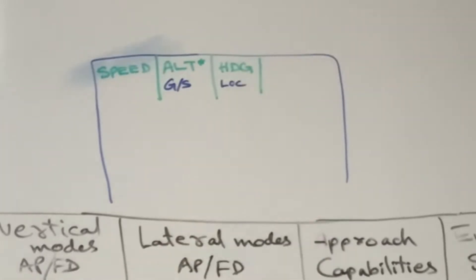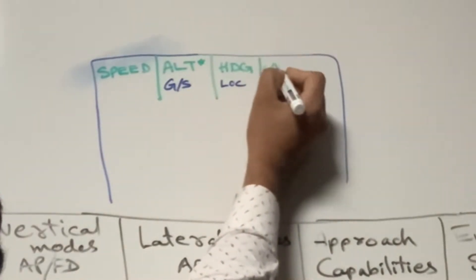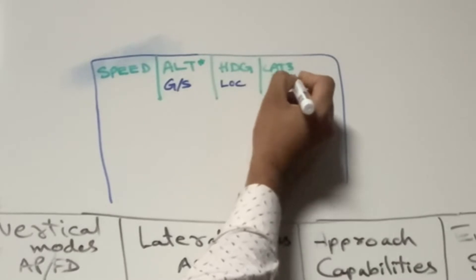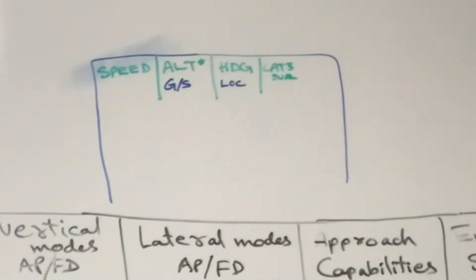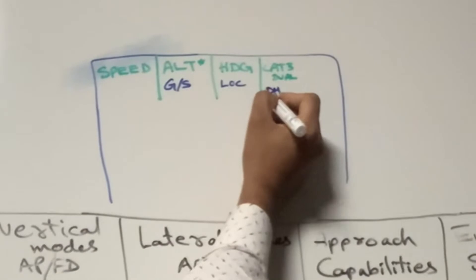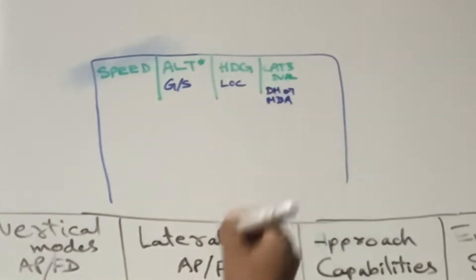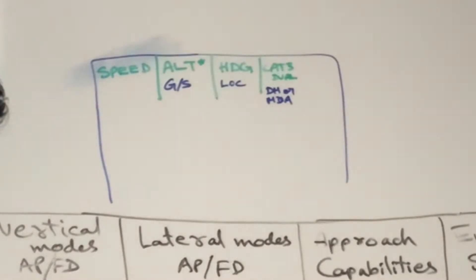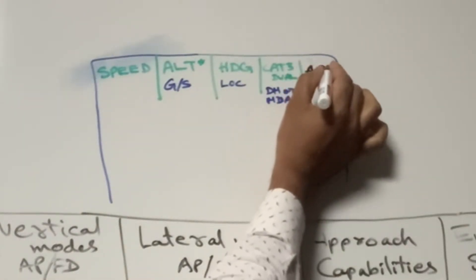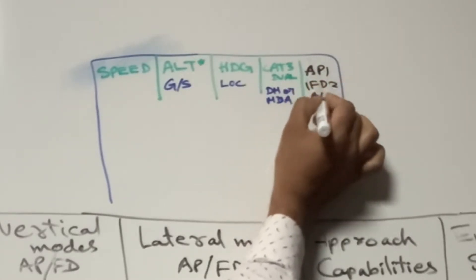The fourth column shows approach capabilities — suppose CAT 3 Dual — and the DH or MDA. The fifth column shows autopilot, flight director, and autothrust status.